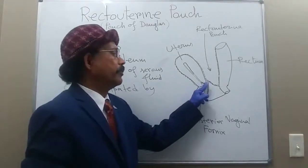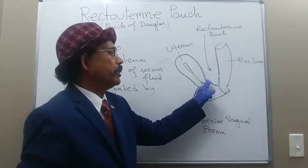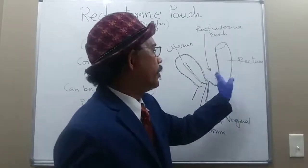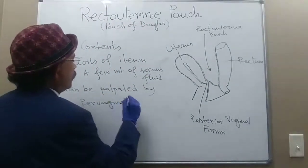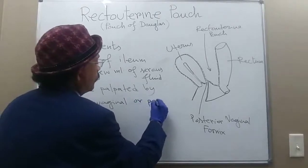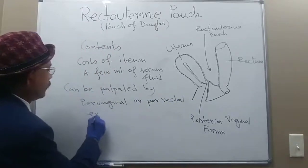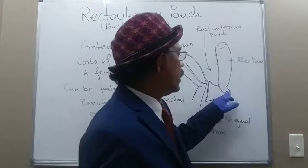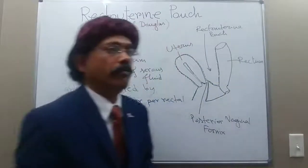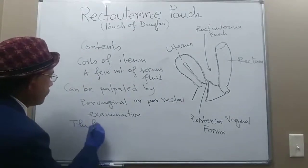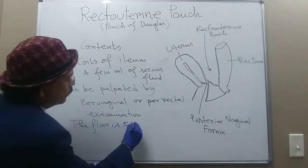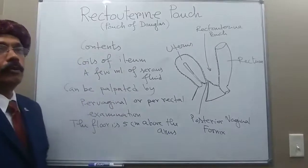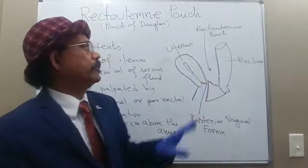These normal contents can be palpated by per-rectal examination or per-vaginal examination. If we pass our finger through the anal canal or vagina, we can palpate whether something is present here — any deposit, something hard, or something with a different feeling. The floor is about five centimeters above the anus.